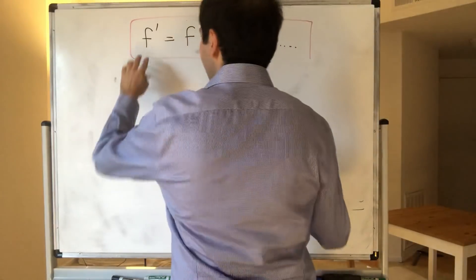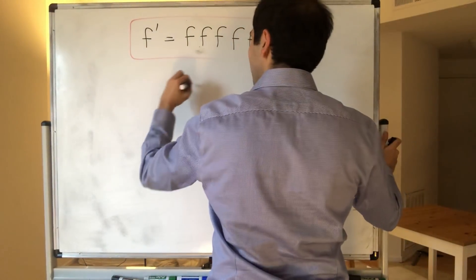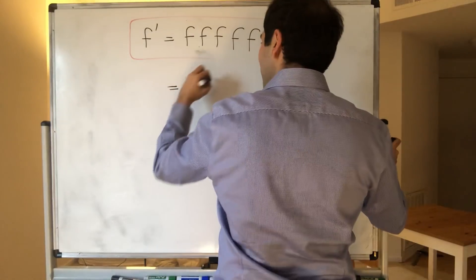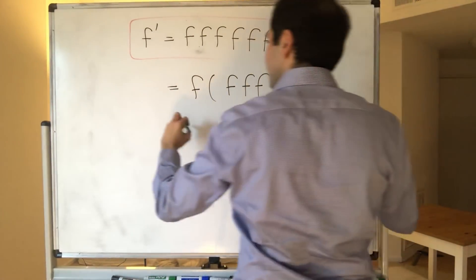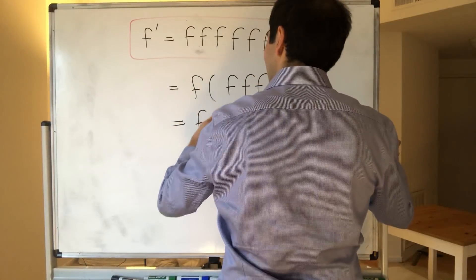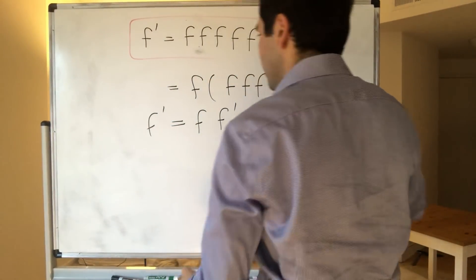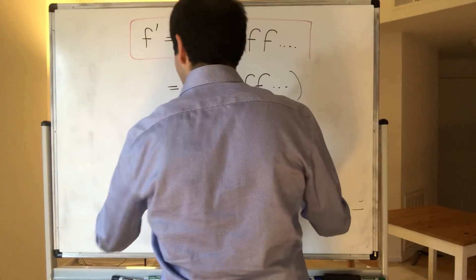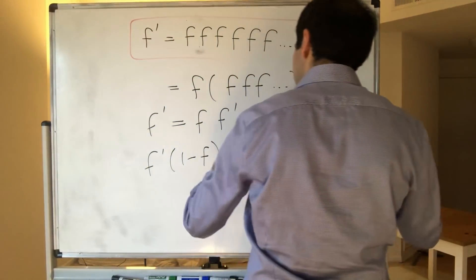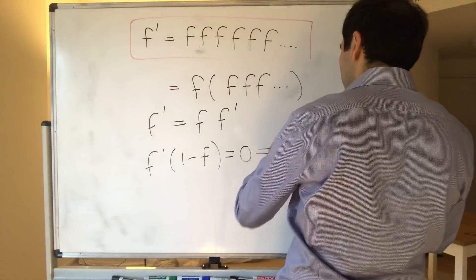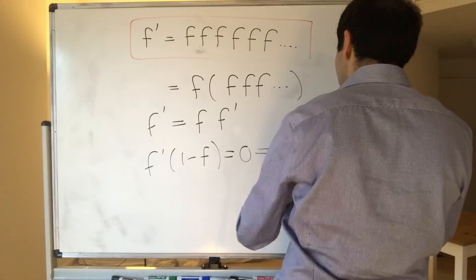Notice f' equals f is the same thing as saying f' equals f times f, and that's the same as f times f prime. So we know f' equals f times f', so f' times (1 minus f) equals 0, and so f' equals 0 or f equals 1.